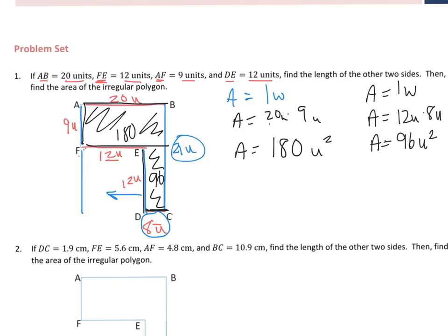So that's 96. And then I can just add the 2. Looks like it's 276 units squared. So that's the area of the irregular polygon.